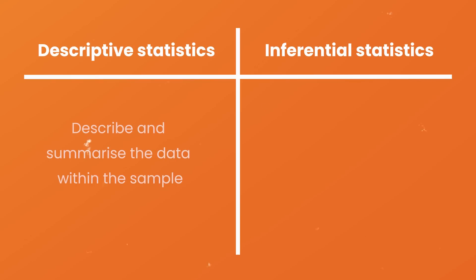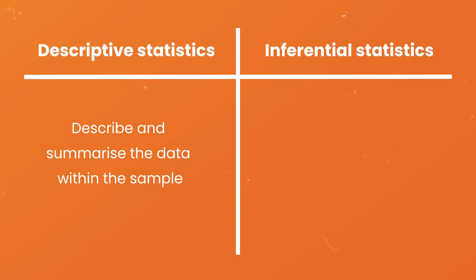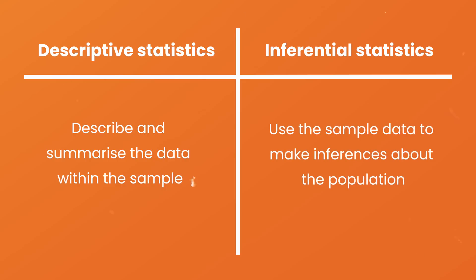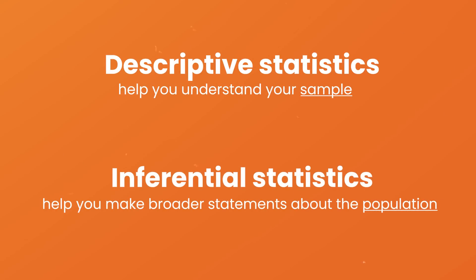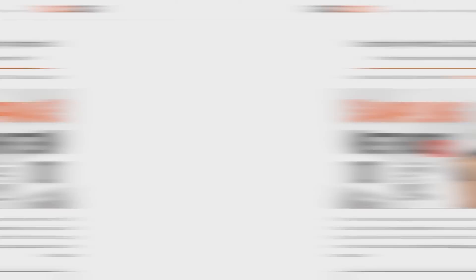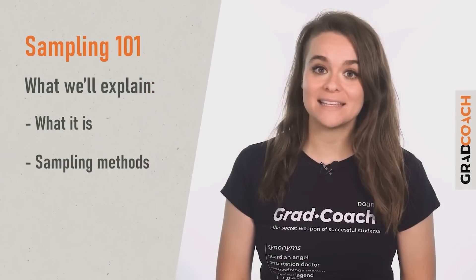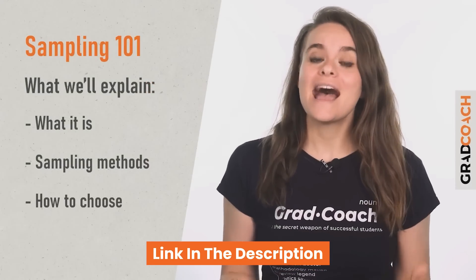Simply put, descriptive stats describe and summarize the data itself, while inferential statistics use the data from a sample to make inferences or predictions about a larger population. Put another way, descriptive stats help you understand your sample while inferential statistics help you make broader statements about the population based on that sample. If the concepts of samples and populations sound a little bit foreign to you, don't worry — we've got an explainer video covering exactly that and we'll include a link in the description.